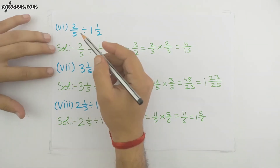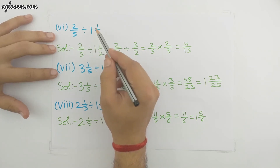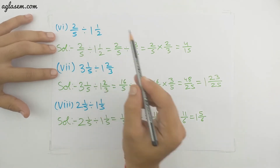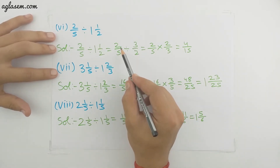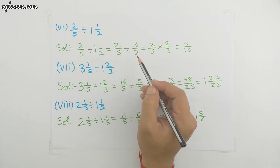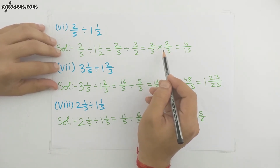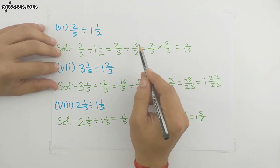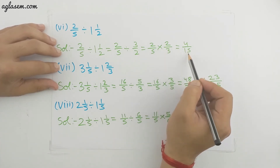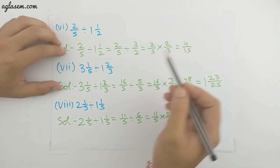Sixth part: 2/5 divided by 1 whole 1/2. Here the second number is a mixed fraction. We change 1 whole 1/2 to the improper fraction 3/2. So we divide 2/5 by 3/2, which becomes 2/5 multiplied by 2/3. Multiplying gives 4/15, which is a proper fraction.